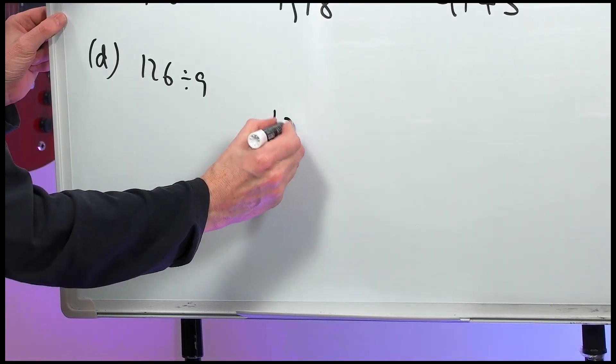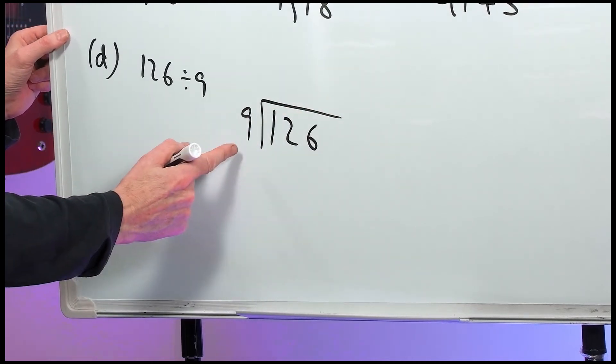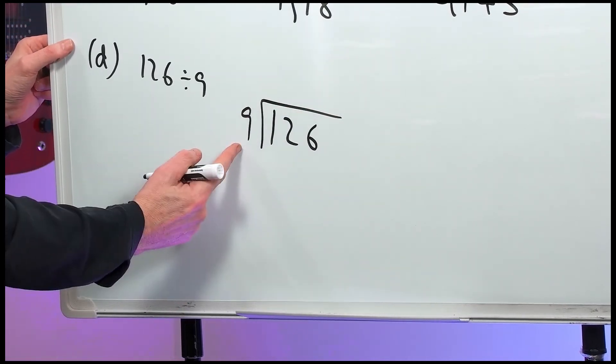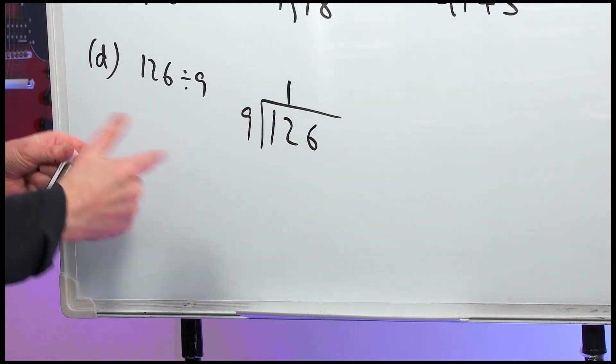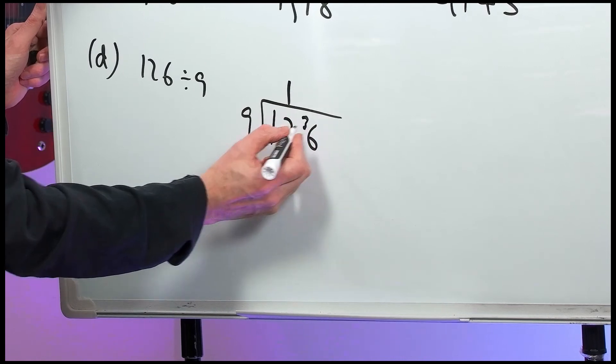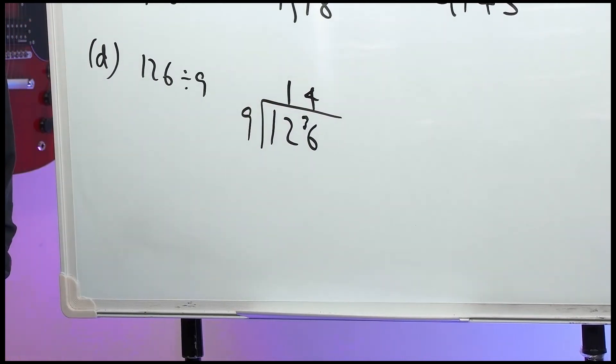Part D. 126 divided by 9. 9 into 1 doesn't go. 9 into 12 goes once. So it's 9, 10, 11, 12. So, it's remainder 3. 9 into 36 go 4 times. So, again, it's 14.